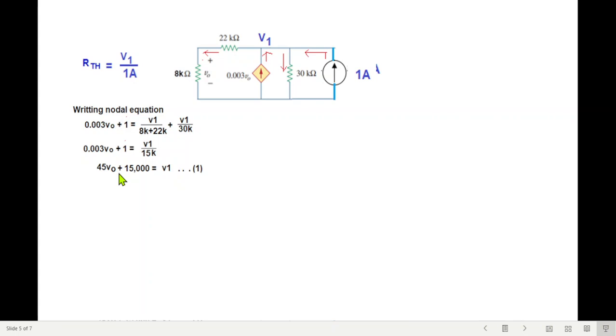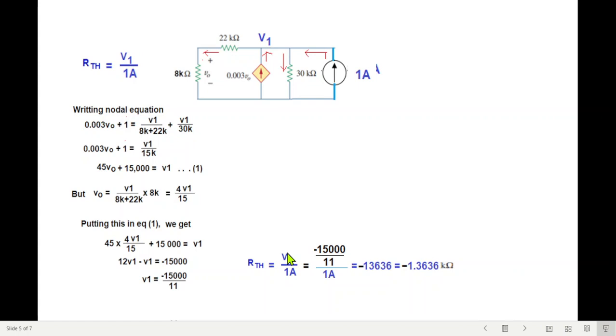Now to find V1, we need to eliminate V0 and V0 we can eliminate from here. You can see that V0 is actually V1 divided by this total resistance, that is 30k multiplied by 8k. So V0 is V1 divided by 8k and multiplied by 8k, it gives 4 over 15V1. Now we will plug this value into equation number 1. So plugging into equation number 1 and simplifying, we get this value of V1. Now that we know V1, we can find out R Thevenin. R Thevenin is V1 over I1, V1 divided by 1 ampere. So this is the answer.